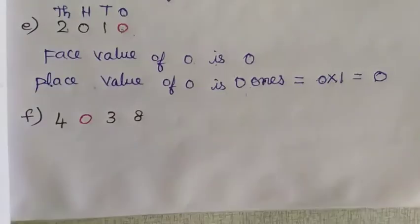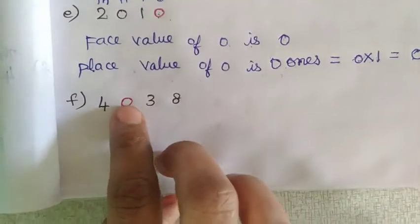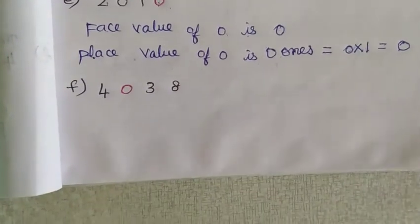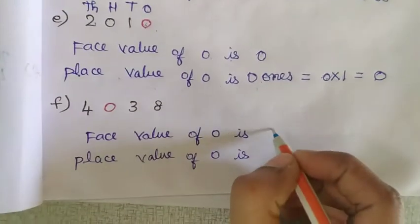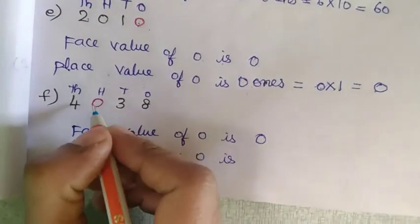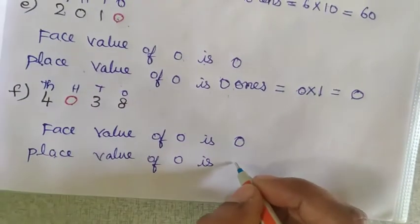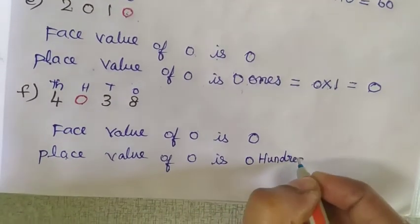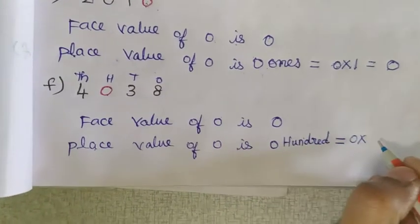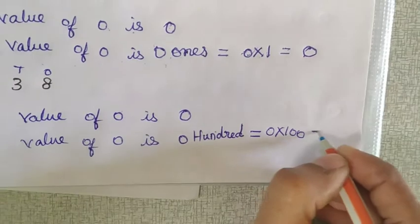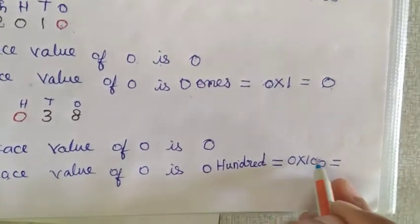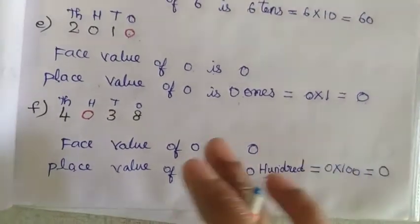F question: we want to find the face and place value of 0. Face value of 0 is 0 itself. Place value: put 1's, 10's, 100, 1000. 0 is sitting in 100's place. So, 0 hundreds equals 0 multiplied by 100. Any number multiplied by 0 means the answer is 0. So 100 multiplied by 0 equals 0.